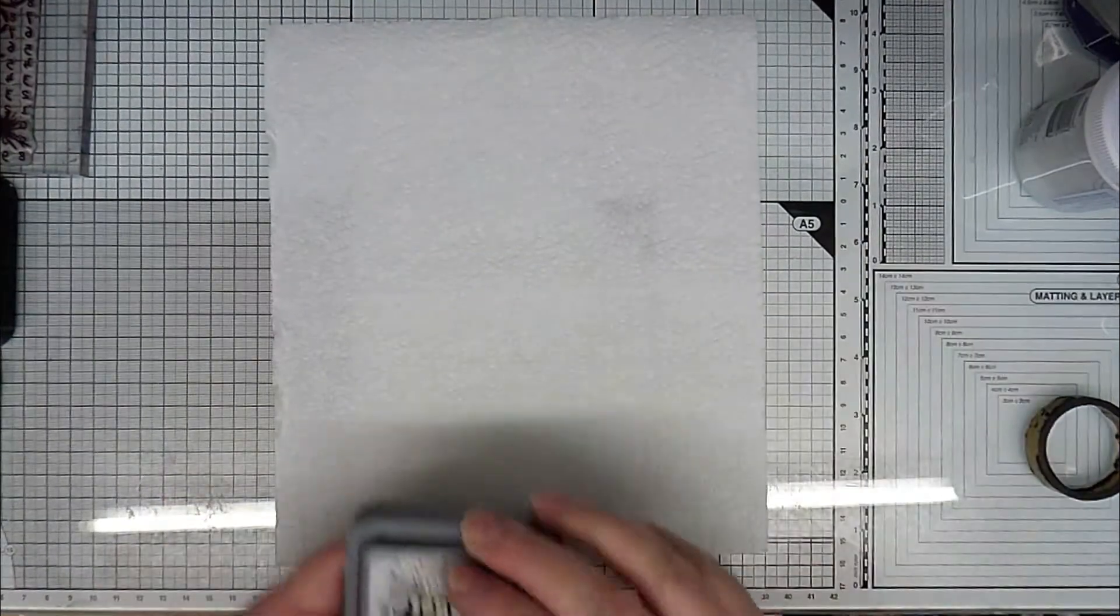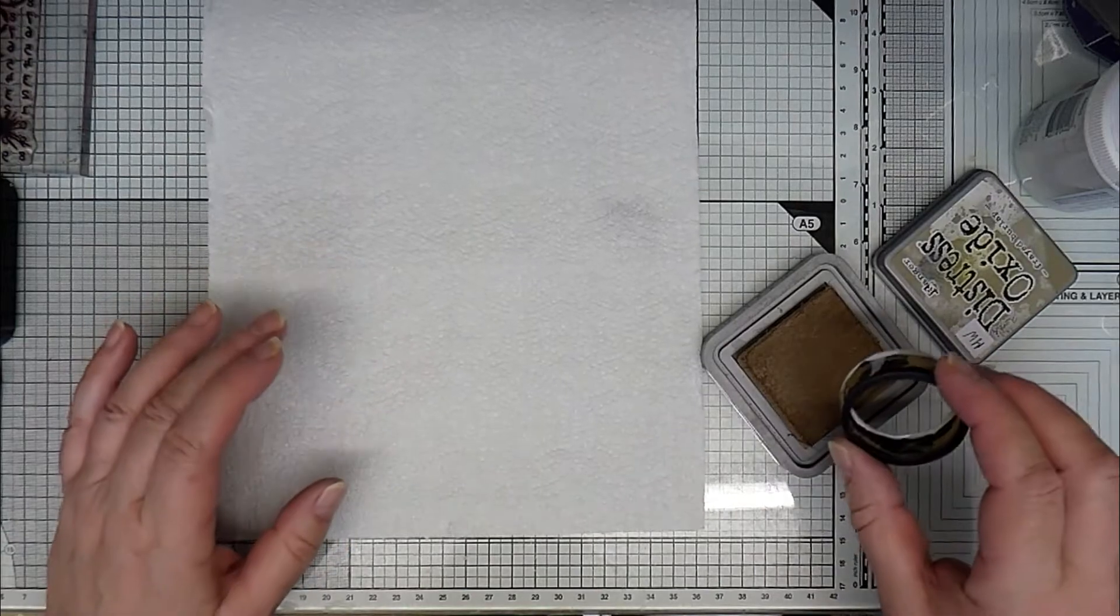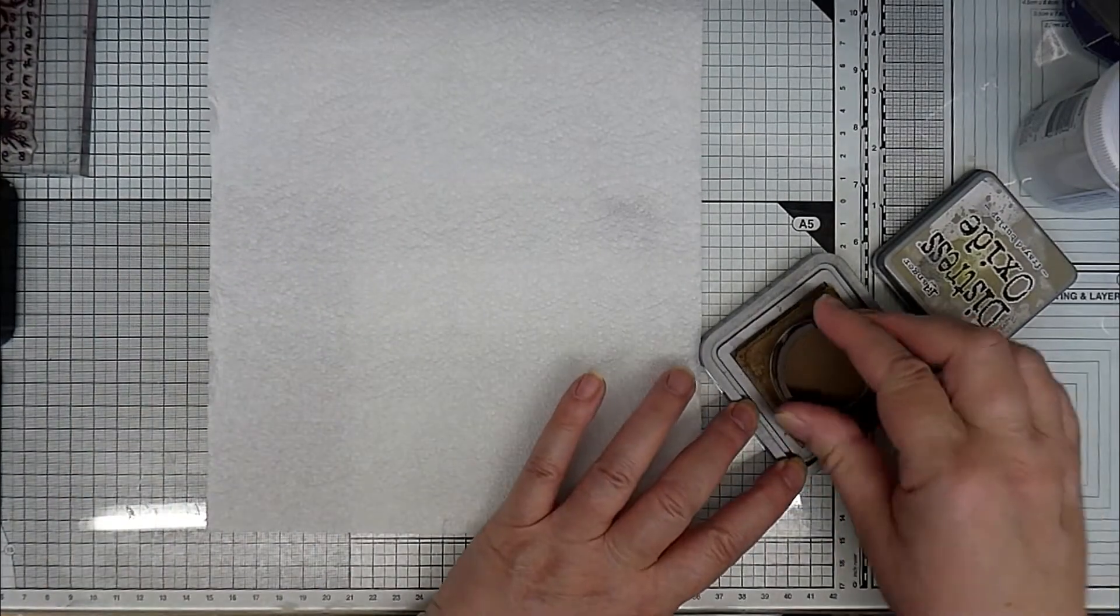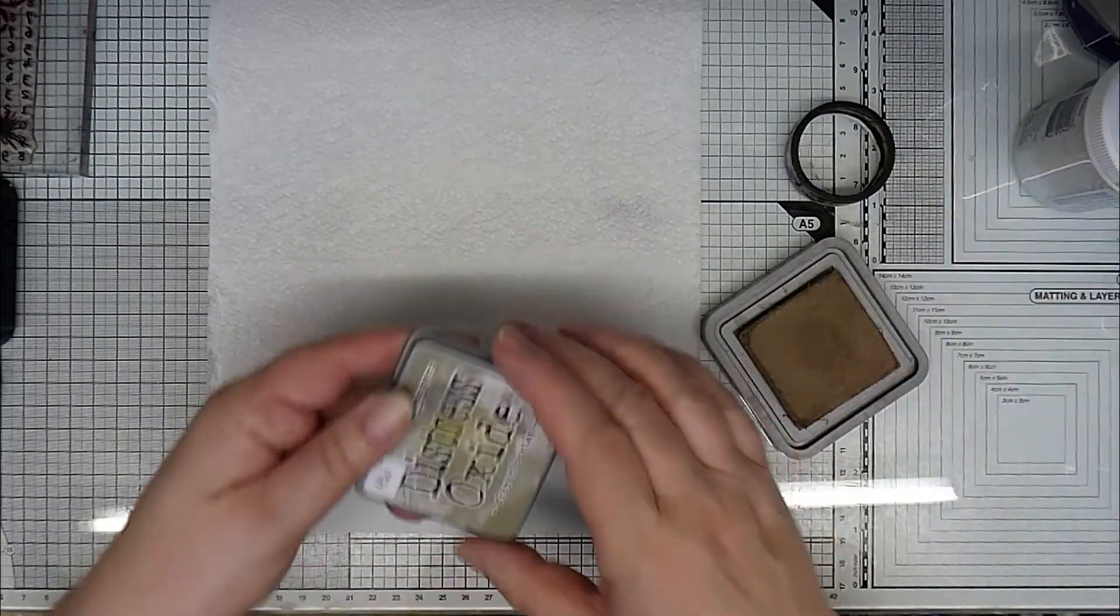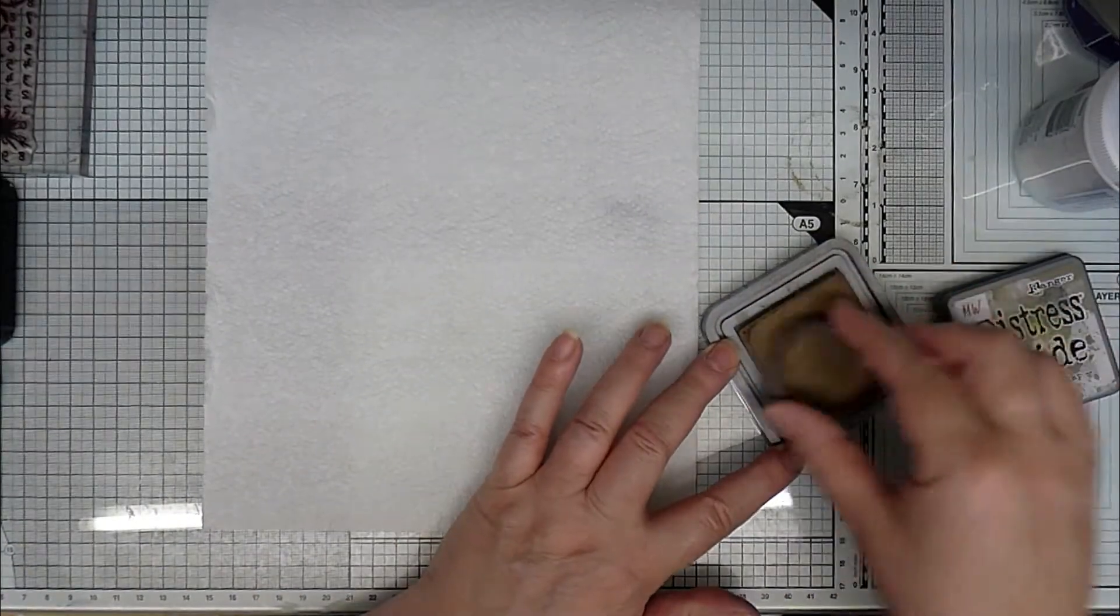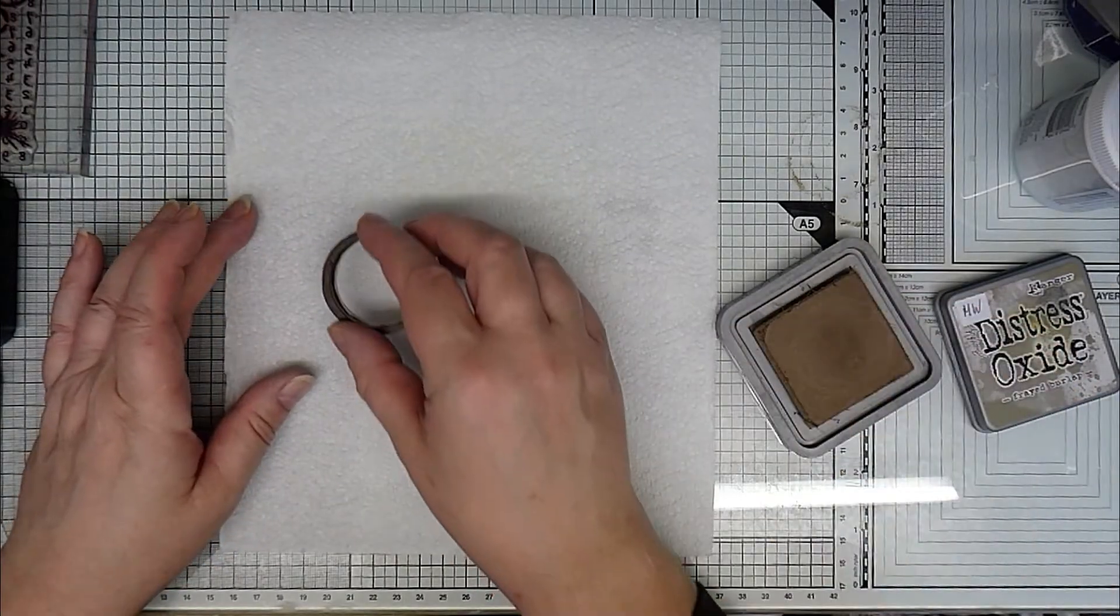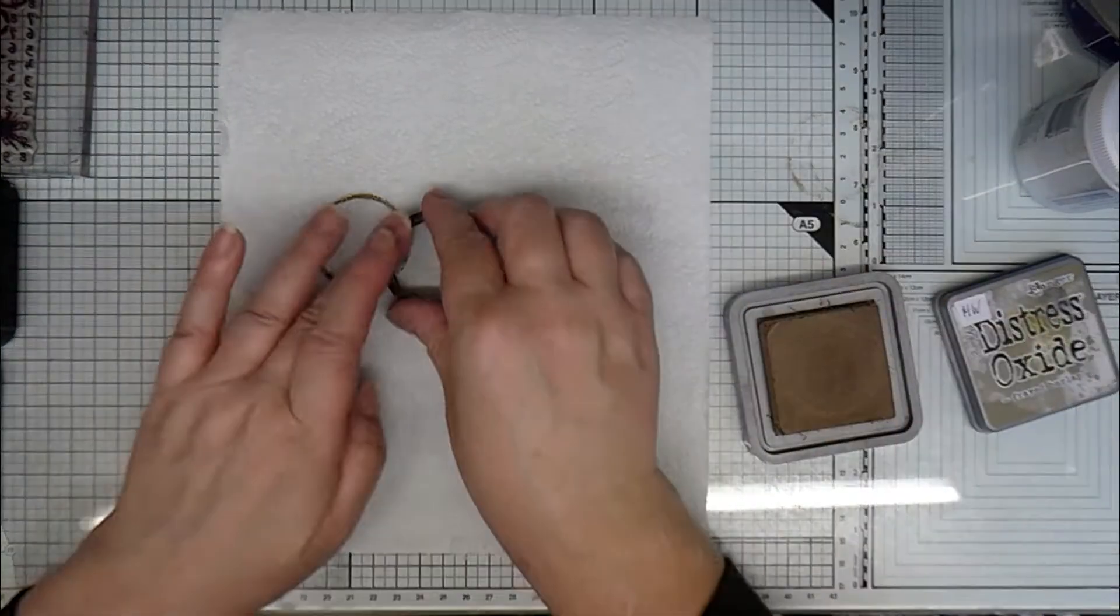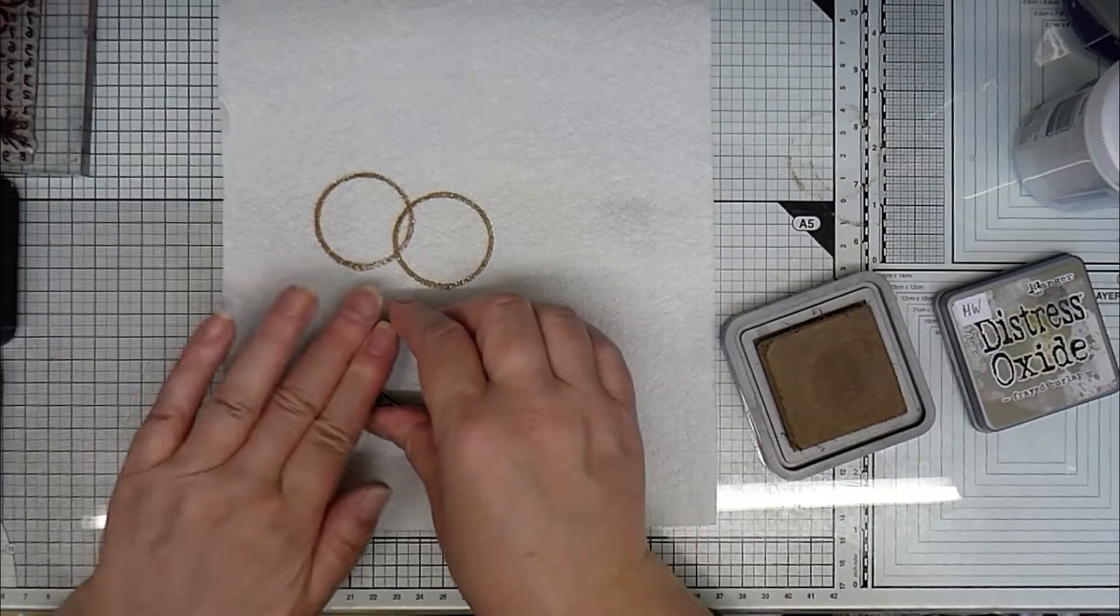All right, so I've decided I want to create some ATCs using the same technique. This is frayed burlap this time. I've got the middle out of a sellotape roll or something along those lines, and I'm just going to stamp randomly over this layer of kitchen roll.